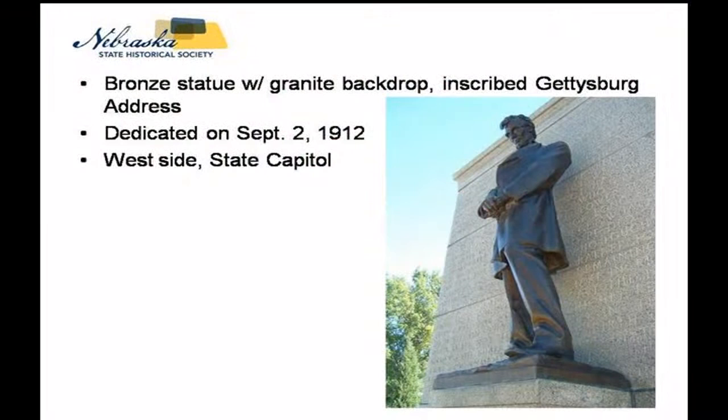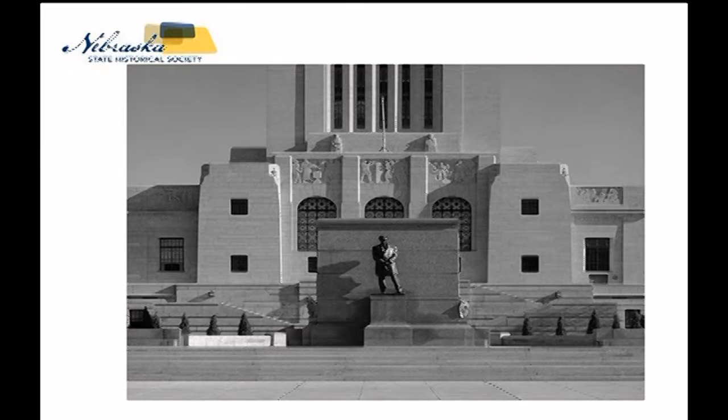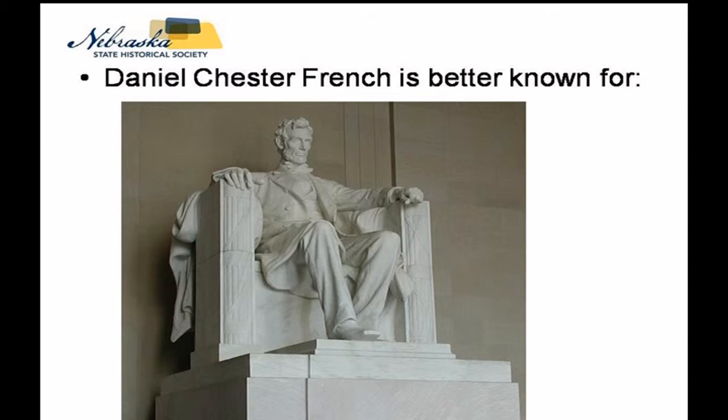What we have now is a bronze statue with a granite backdrop with the Gettysburg Address inscribed on it. It was dedicated at the state capitol grounds on September 2, 1912, and is currently located on the west side of the state capitol. When I tell people it was done by Daniel Chester French, they often don't know who he is. He is one of the most renowned sculptors of his day — the sculptor of the Lincoln Memorial in Washington, D.C.